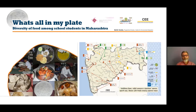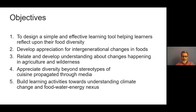The map basically shows the distribution of the schools — around 18 districts spread across all regions, including administrative as well as agro-climatic zones of Maharashtra. Our objective was to design a simple and effective learning tool, helping learners reflect upon their own food diversity and develop appreciation for intergenerational changes happening when it comes to food diversity, and also helping them relate to changes happening in agriculture and wilderness.